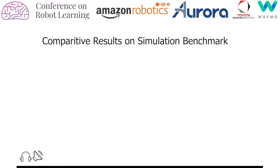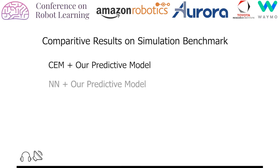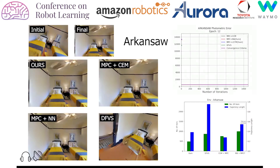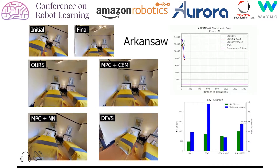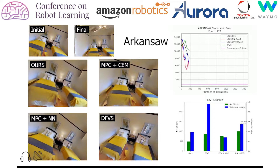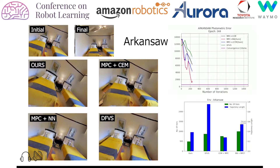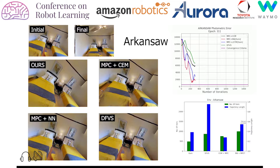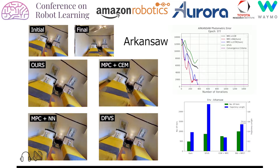We now demonstrate comparative results on the benchmark scenes. We compare our approach of MPC plus LSTM with the baselines of CEM plus our predictive model and NN with our predictive model. We also compare our results with DFVS, which is the current state of the art in visual servoing. The drone is able to correctly navigate to the desired location in a scene that includes two identical beds in the room. We plot the evolution of photometric error for comparing these approaches.